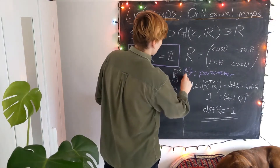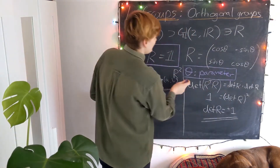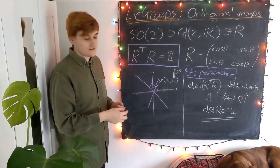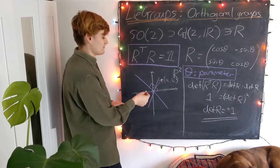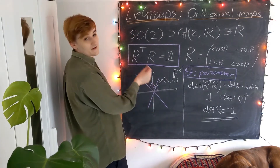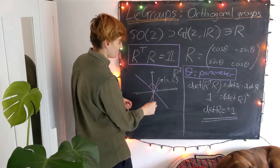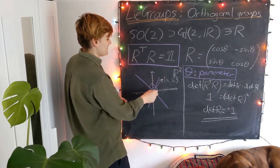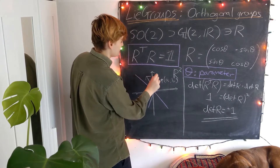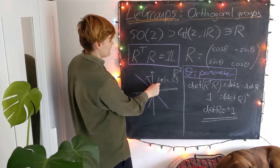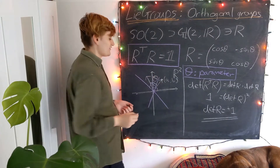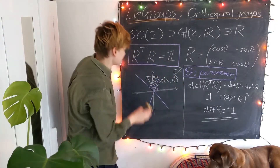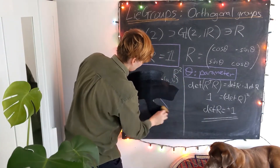That's a matrix description of this group. The free parameter theta obviously corresponds to the angle by which we rotate: if we have some vector and rotate it to another, we're rotating through an angle theta. I now want to explore this in a bit more detail when we talk about the topology of this group.